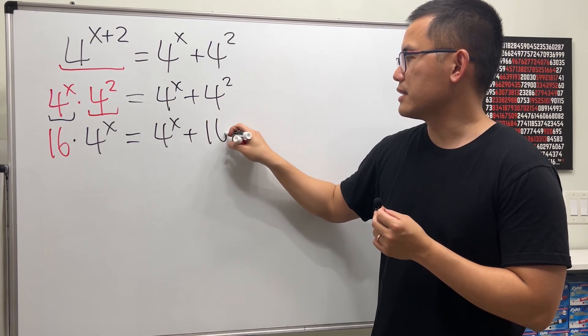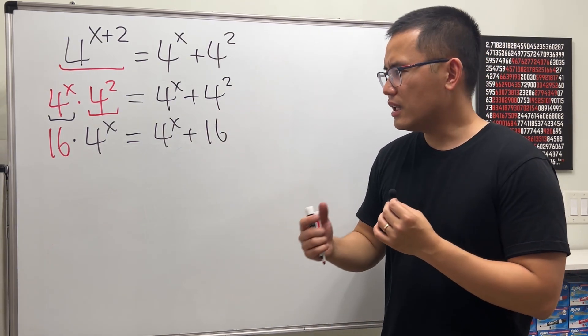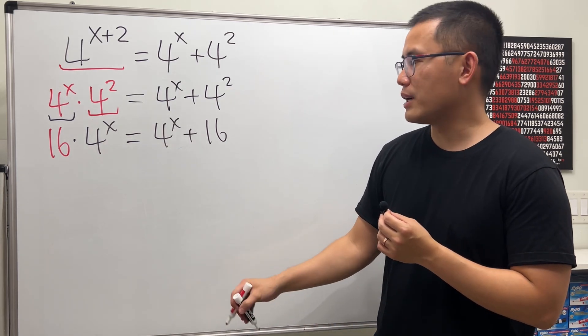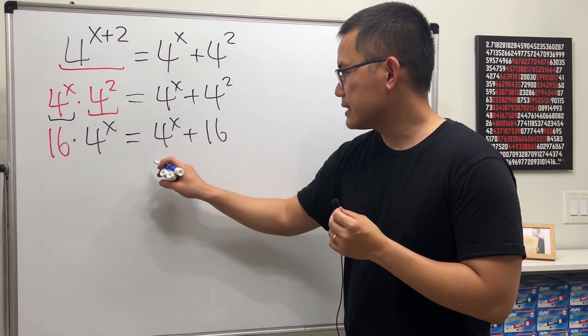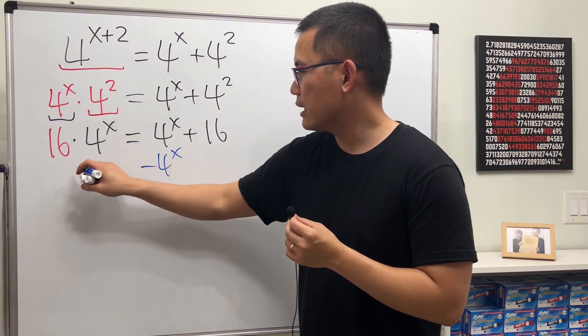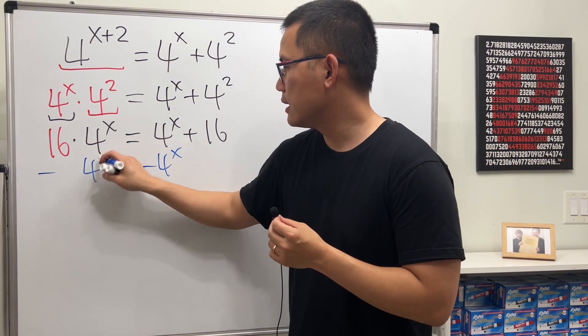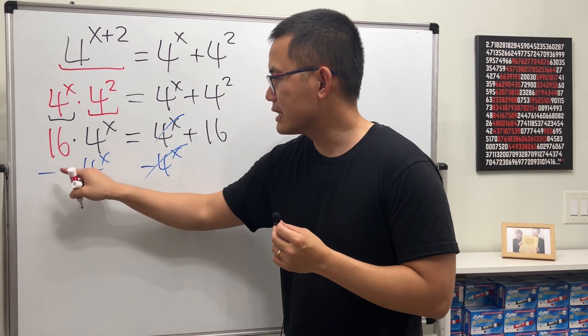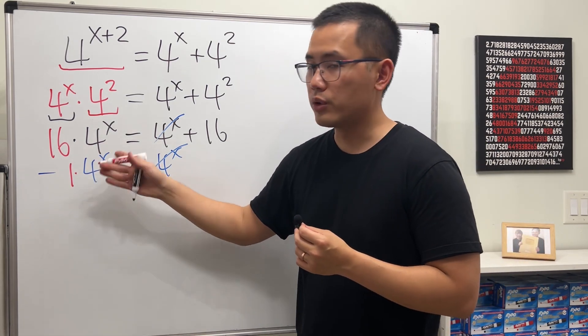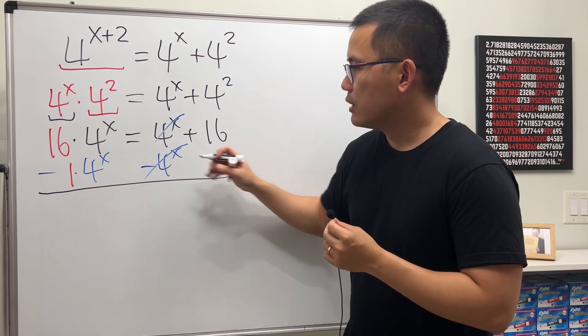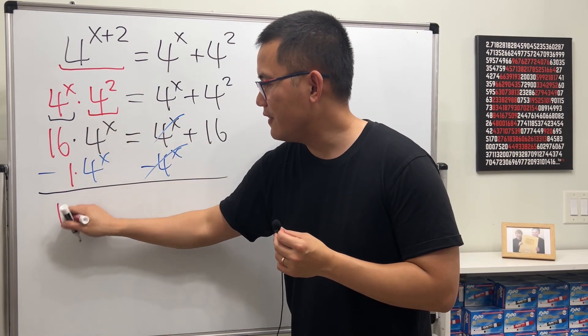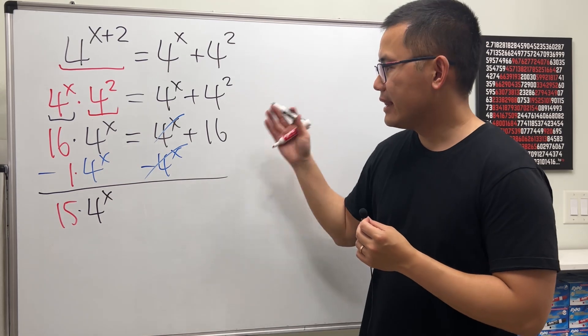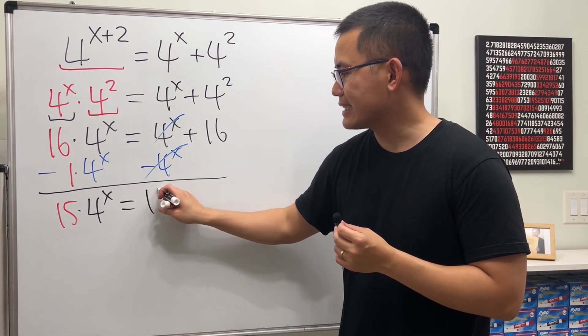Then let's do the usual thing: put all the x's on one side and the numbers on the other side. Let's minus 4^x on both sides. This and that will cancel, and this means we are subtracting one of the 4^x. So we will end up with 15 of the 4^x, and that is equal to 16.